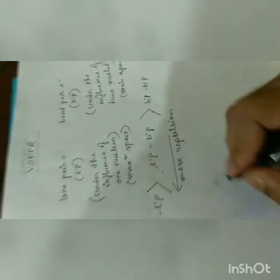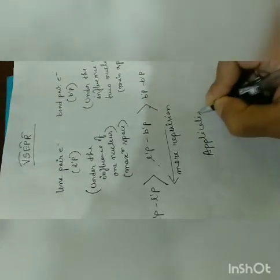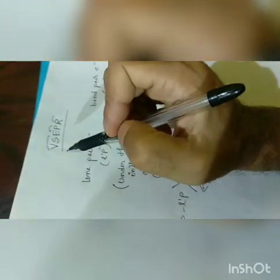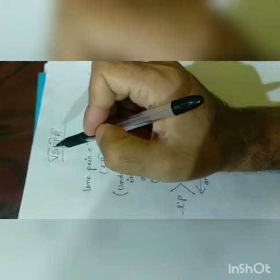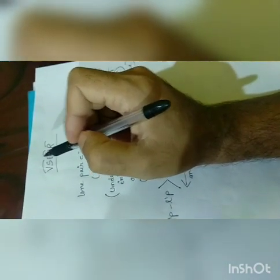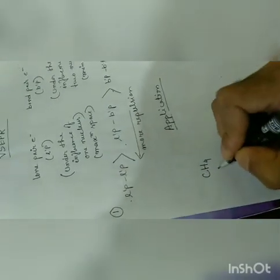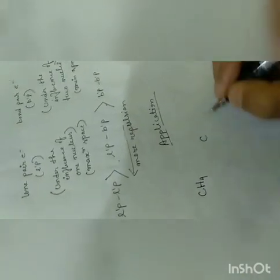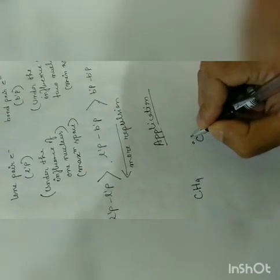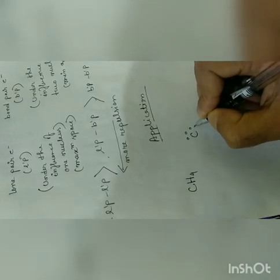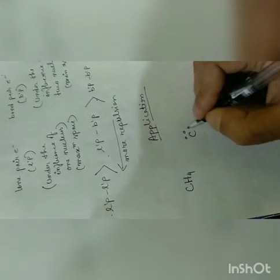So the most important application is to detect the shape of the molecule. If you want to use the equation, it is called valence shell electron pair repulsion, where we discuss the valence electrons of the central atom. Let's take a simple example — suppose we have CH4. The central atom is carbon, and the valence electrons of carbon are the same as the valence electron configuration.